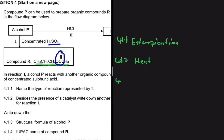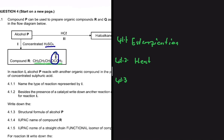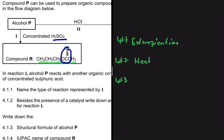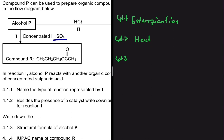For 4.1.3, we need to write down the structural formula of alcohol P. We're going to use compound R to work this out. The structural formula of compound R has three carbons, then an oxygen, then another carbon bonded to an oxygen, and another carbon, with hydrogens elsewhere. The part with the oxygen double-bonded to one carbon comes from the acid, and the other part comes from the alcohol.